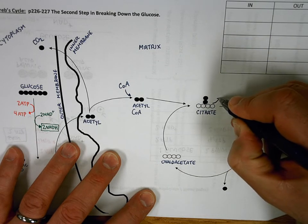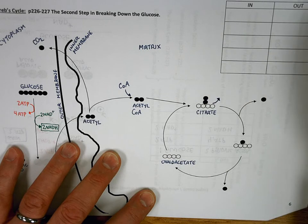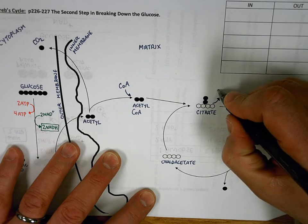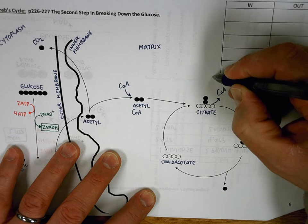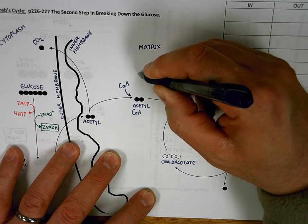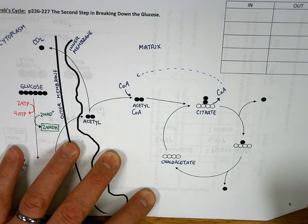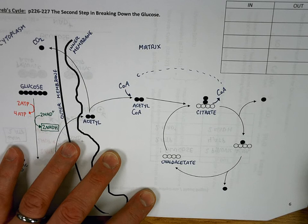As is true with enzymes, once coenzyme A helps to make that happen, it's released. You could imagine that it's going to go back and help the next time it encounters an acetyl.